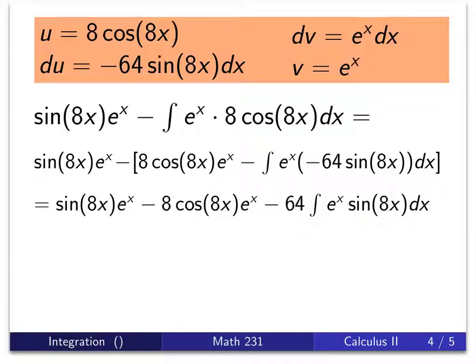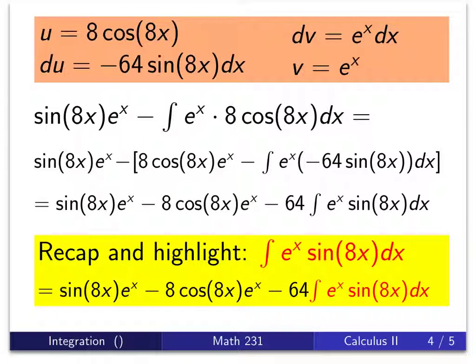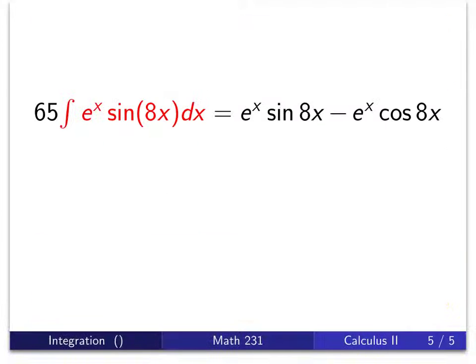We started off with the integral of e^x sin(8x), and we are now at a stage where we have a multiple of our original integral. And so here's the algebraic manipulation I mentioned earlier. We're going to take this term, the -64 integral of e^x sin(8x), and add it to both sides. And what that will do is it will give us 65 of them on the left-hand side.